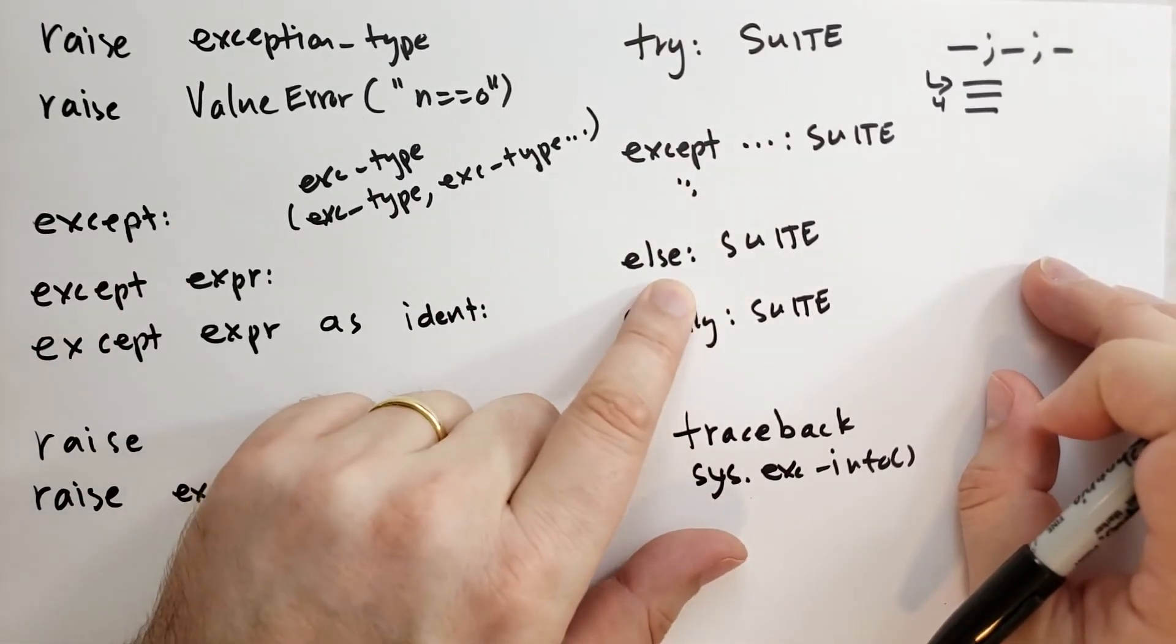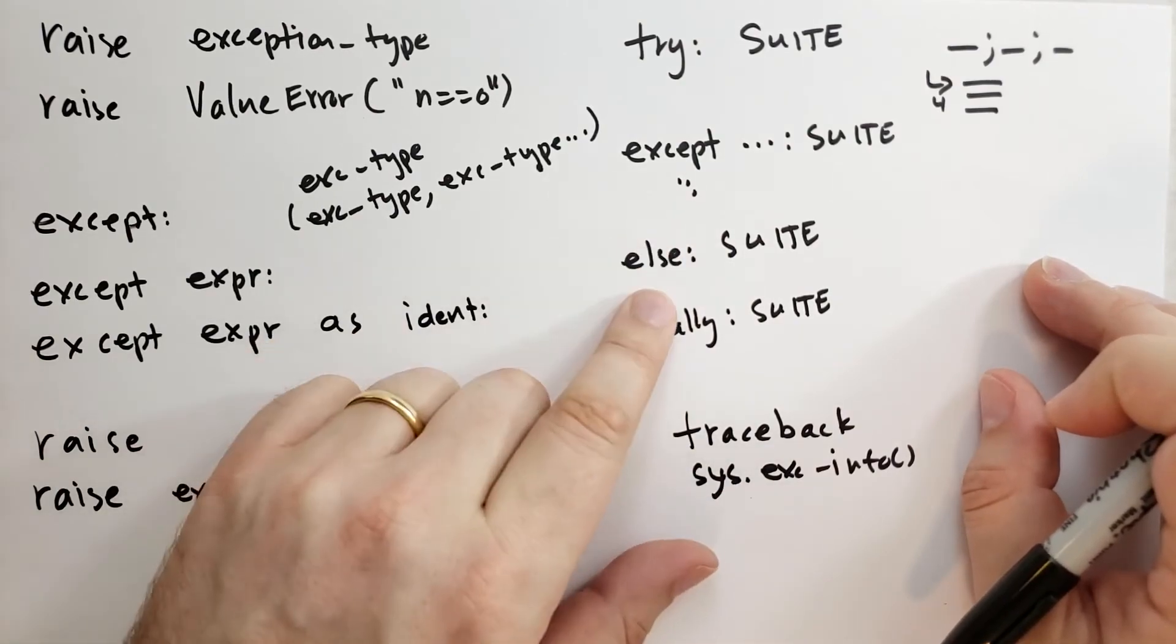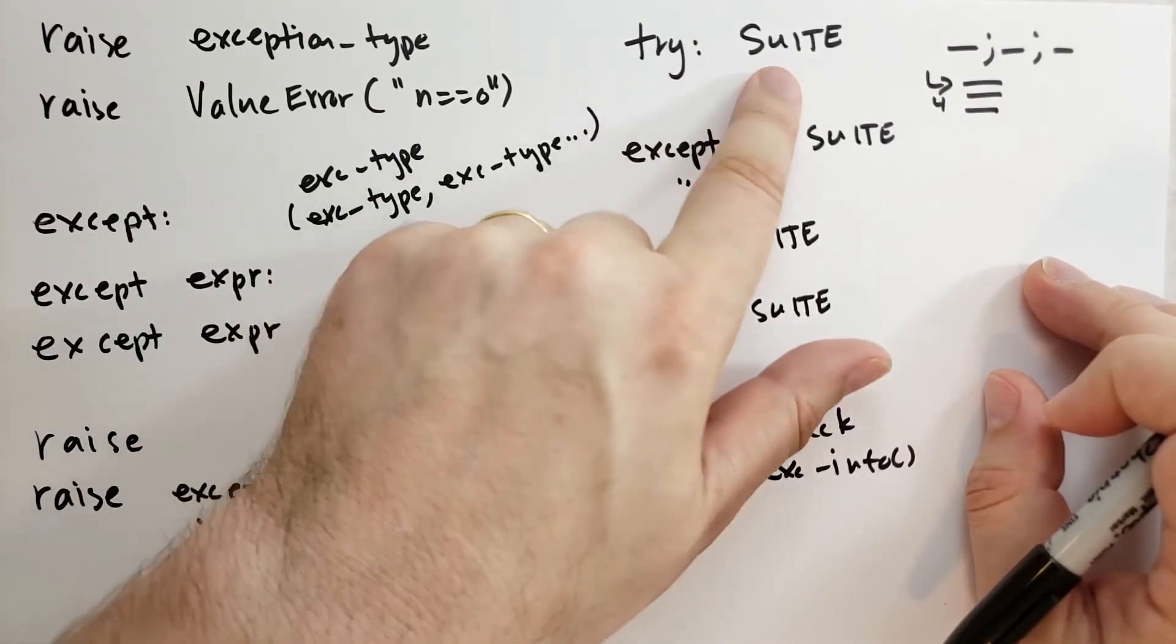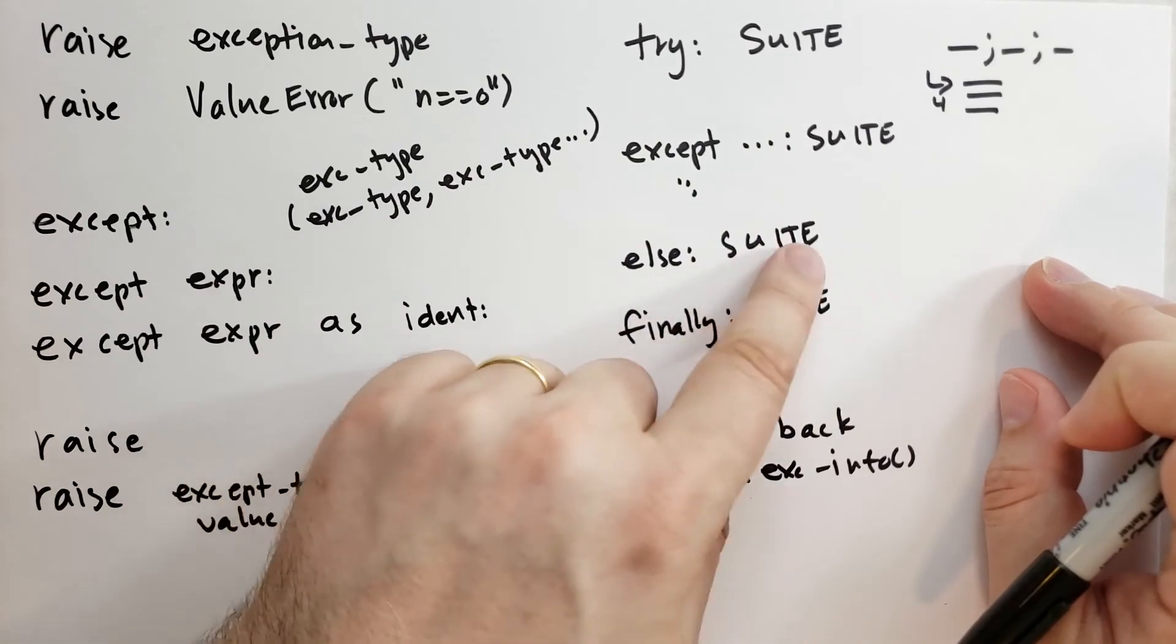Did I mention the else block? If you have except blocks and an else block and the try suite did not raise any exceptions, then the else block will be called.